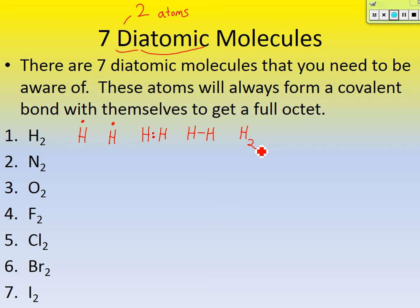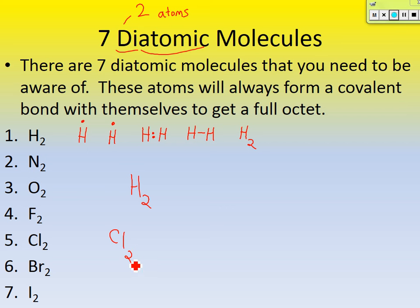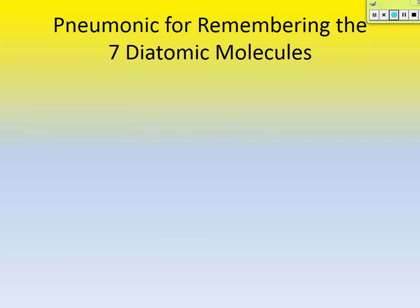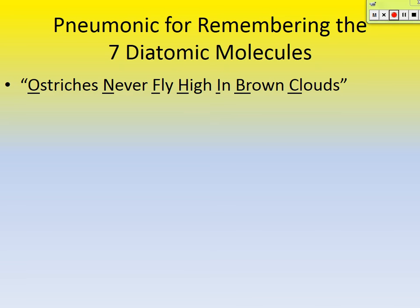How are we going to remember these seven? Because every time these elements — hydrogen, nitrogen, oxygen, fluorine, chlorine, bromine, and iodine — are by themselves, you can't just write H; you have to write H2. If it's just chlorine, you've always got to remember to put a 2 down there. I've got an easy mnemonic to help us remember: ostriches never fly high in brown clouds.